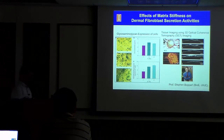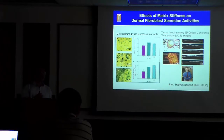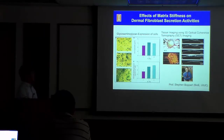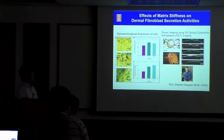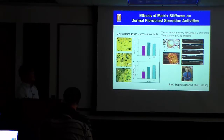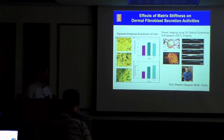We also used this hydrogel to examine the effects of matrix stiffness on skin tissue formation, in collaboration with Professor Boppart. We found that increasing gel stiffness from 0.7 to 4.0 kilopascals stimulates glycosaminoglycan molecular expression of dermal fibroblasts cultured in the 3D matrix. They could generate a very well-dense tissue, characterized using Steve Boppart's 3D optical coherence tomography.